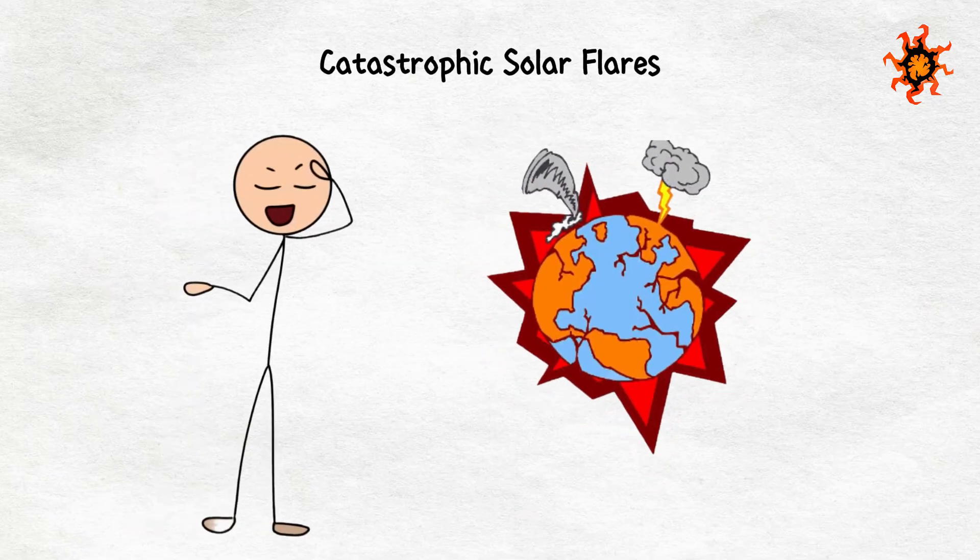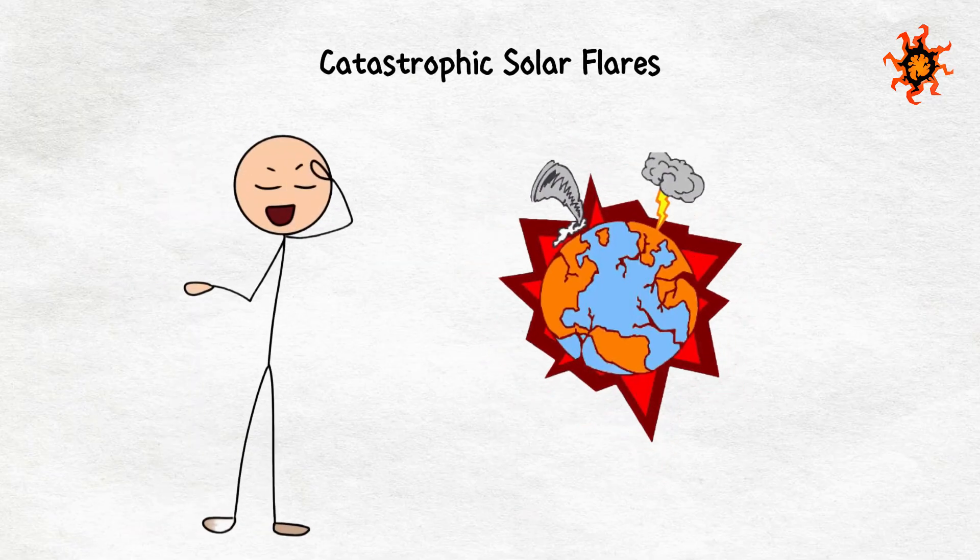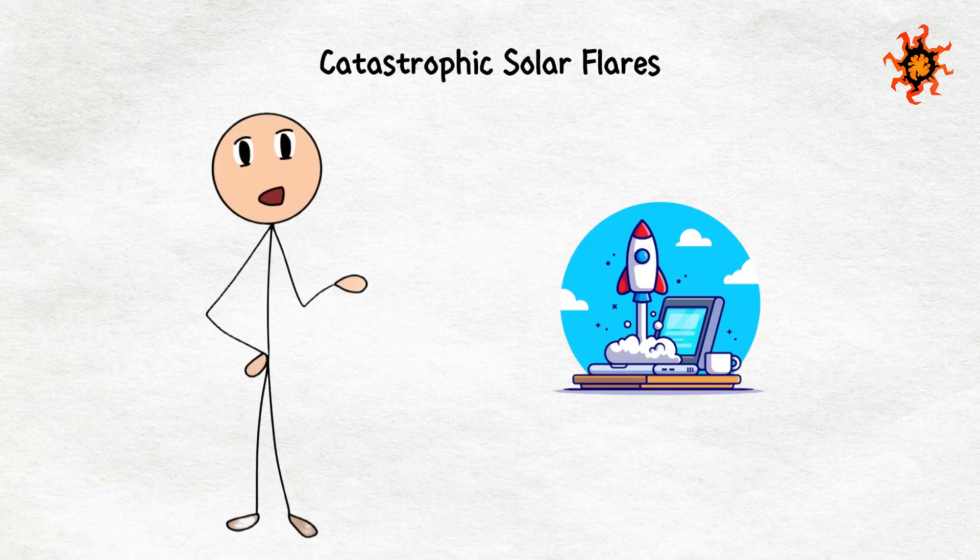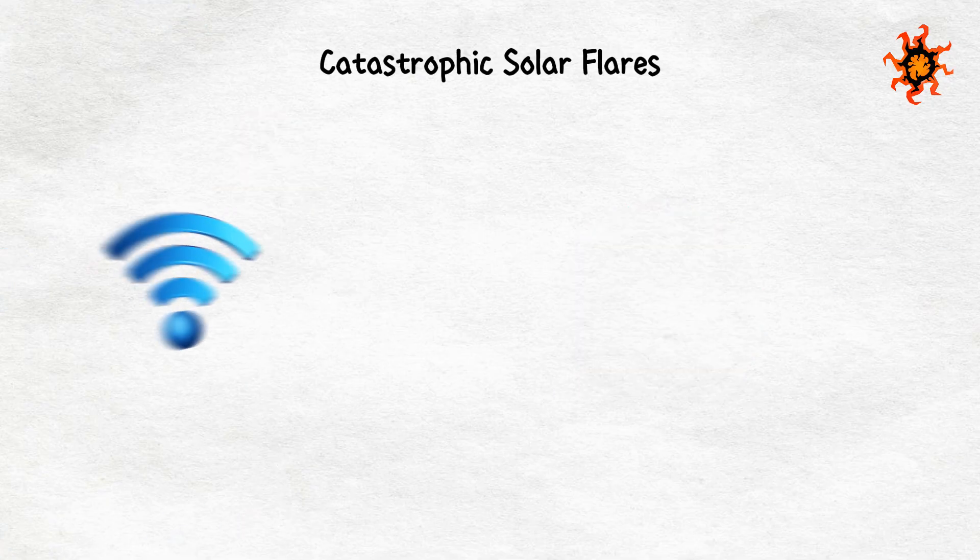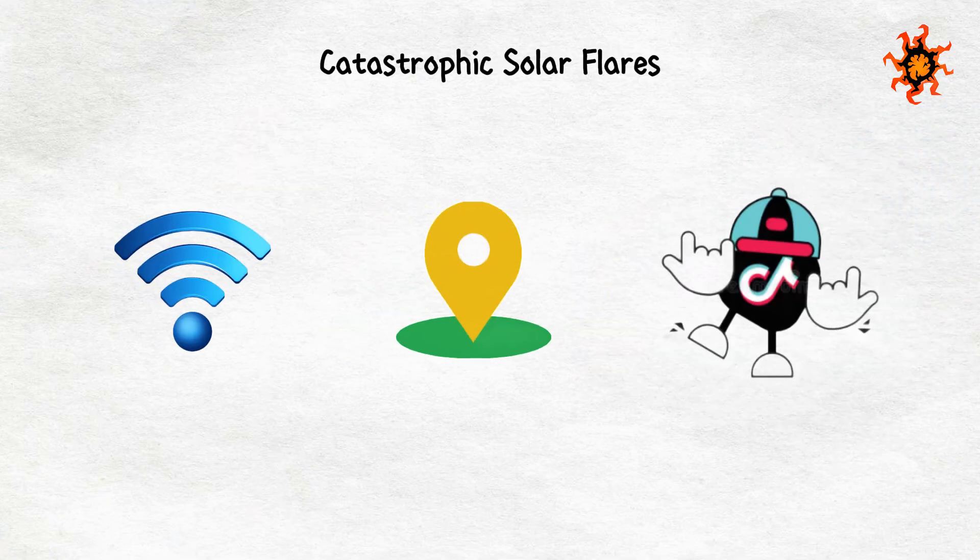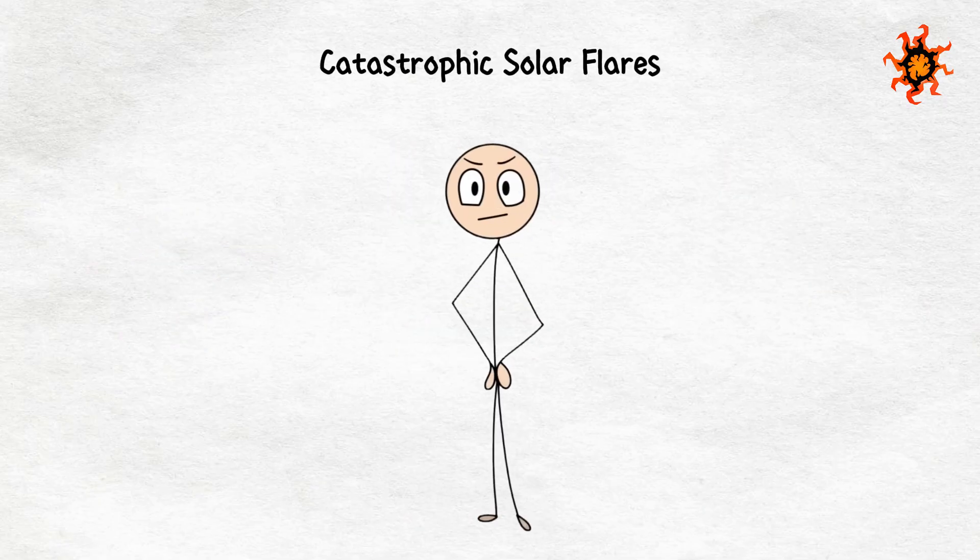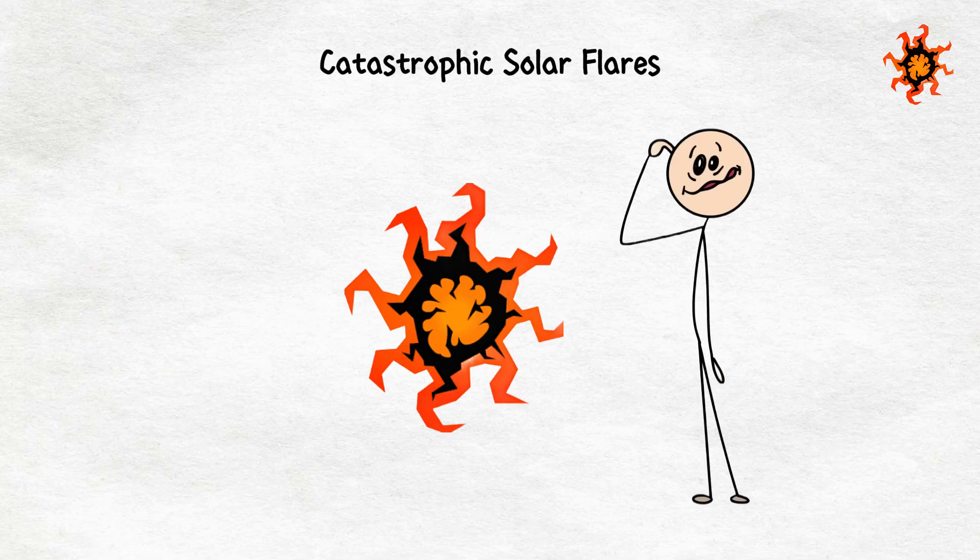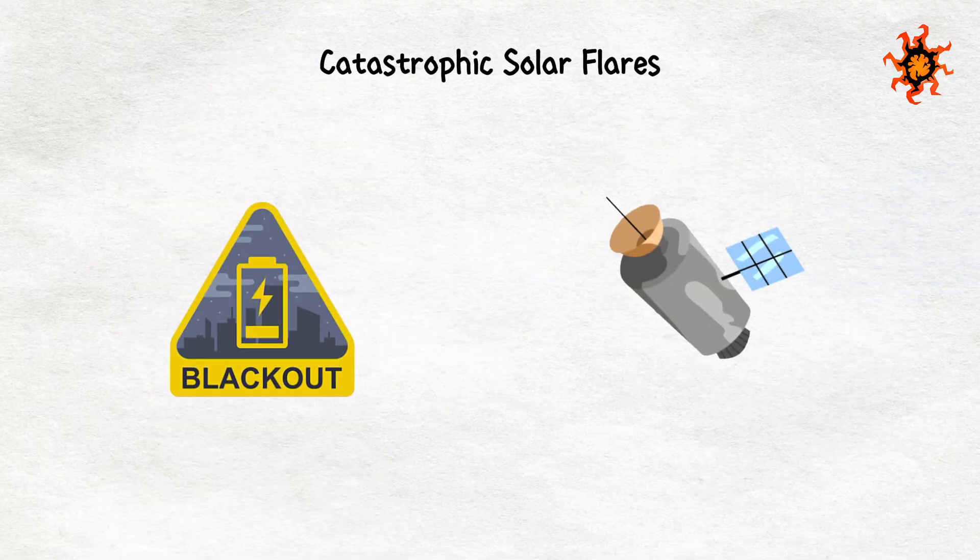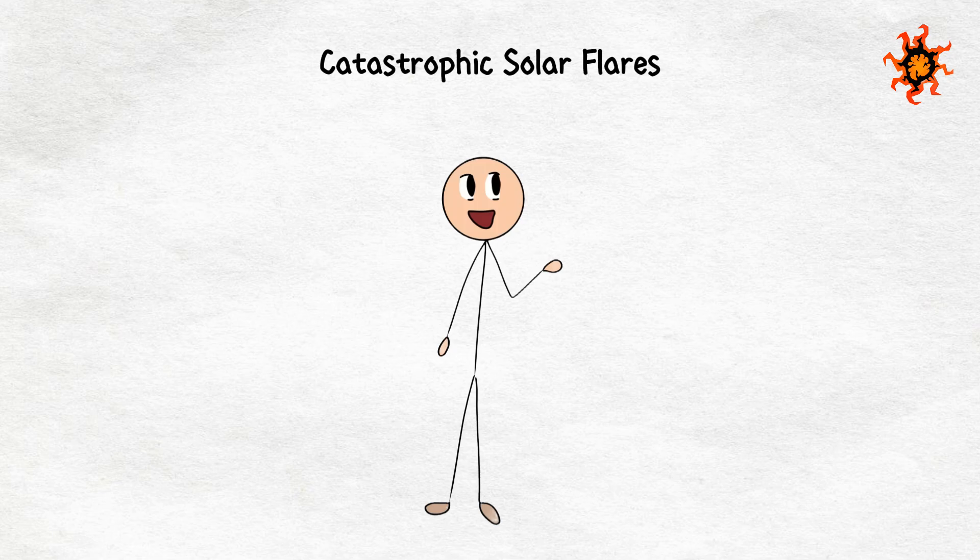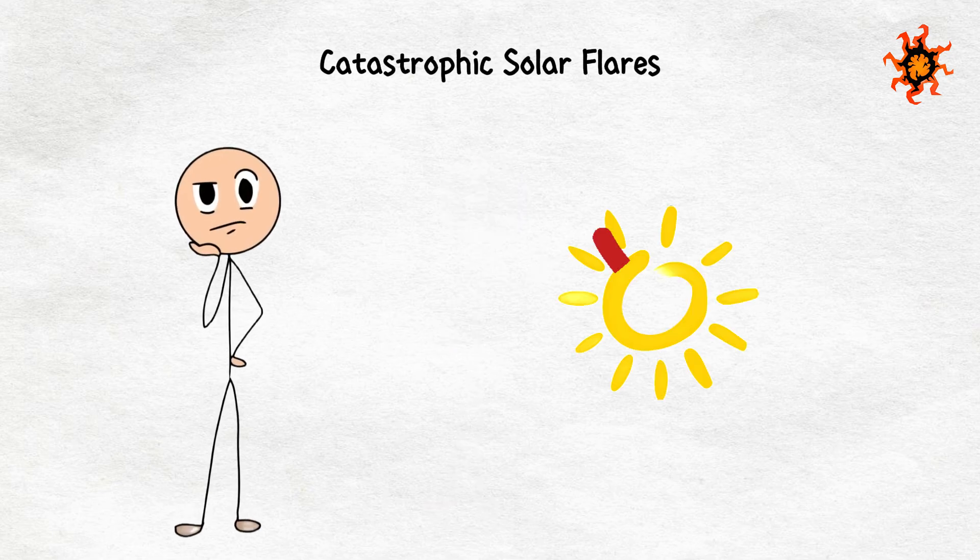Now, if a solar flare of that magnitude hit today, with all our reliance on technology, it would be a nightmare. No internet, no GPS, no TikTok. Imagine. We would be thrown back to the Stone Age in terms of communication. Even just a moderate solar flare can cause issues, like blackouts and satellite failures. So the next time you are sunbathing, just remember, the sun is not always our friend.